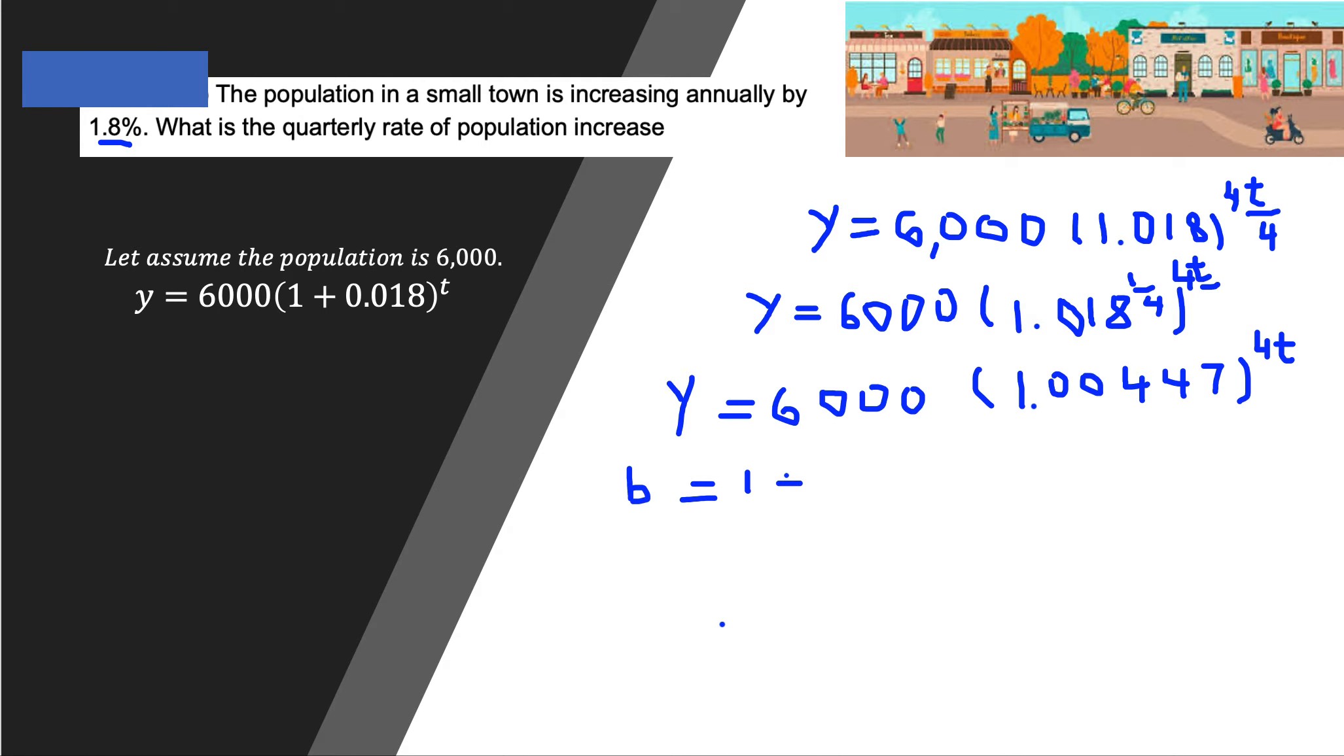And b we already see here is equal to 1.00447, so 1.00447 is equal to 1 plus r.